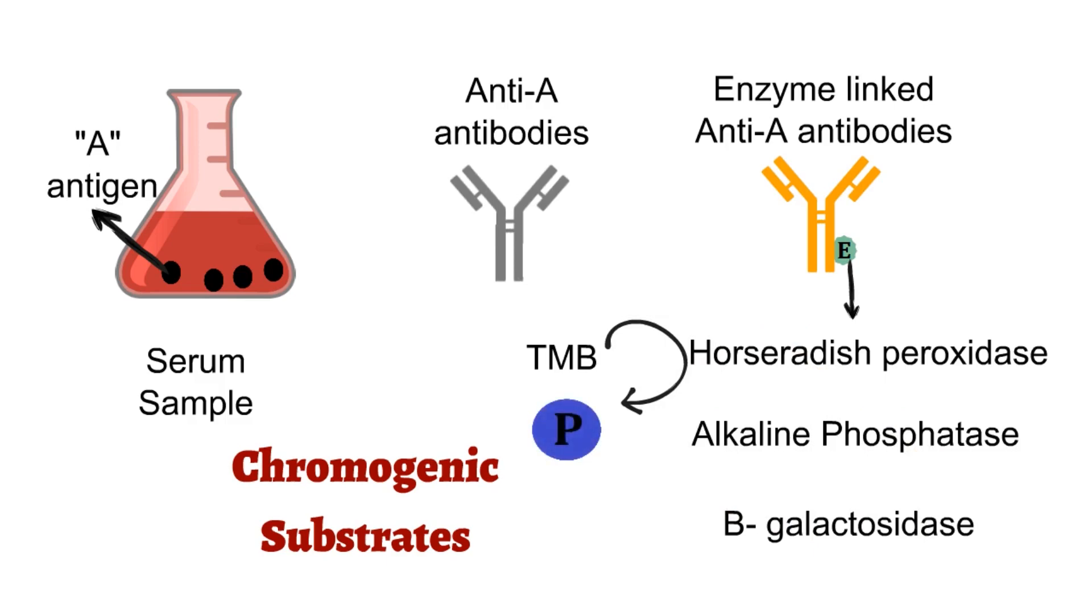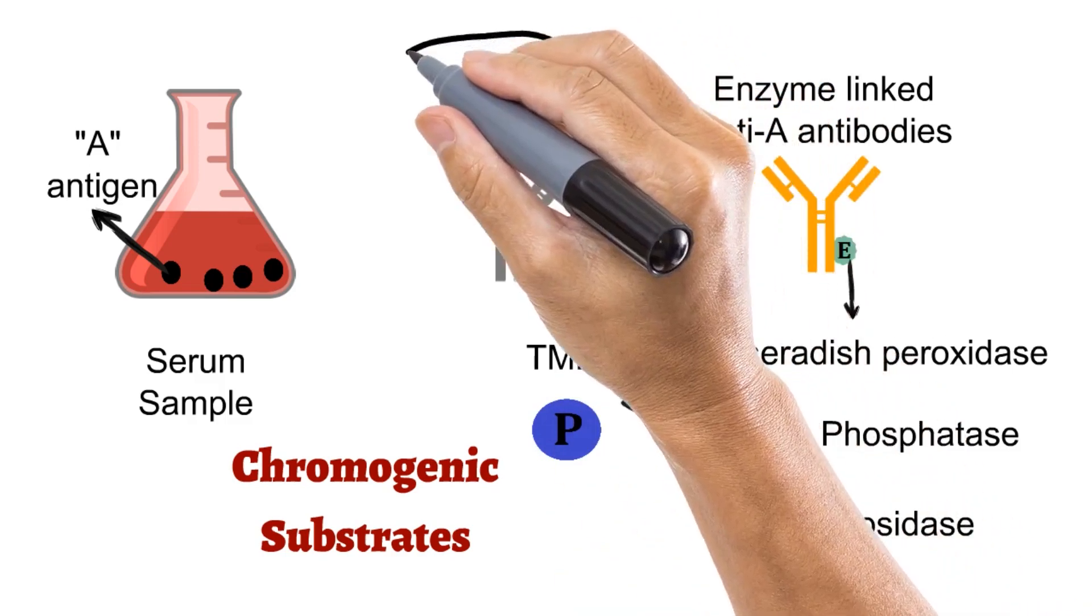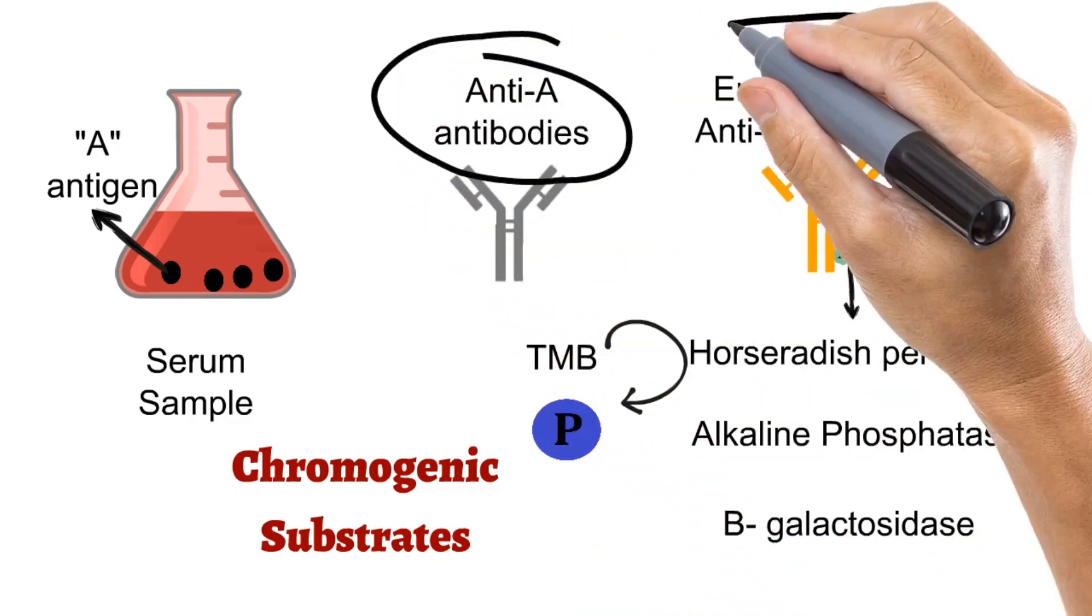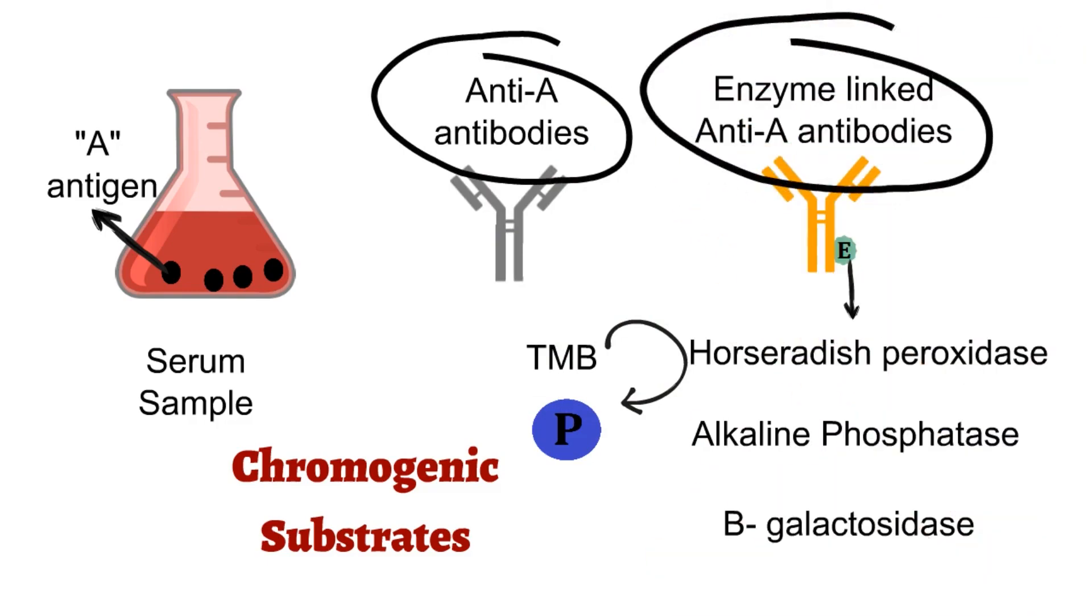So for detection of A antigen, we will require these two important things: anti-A antibodies and enzyme-linked anti-A antibodies.